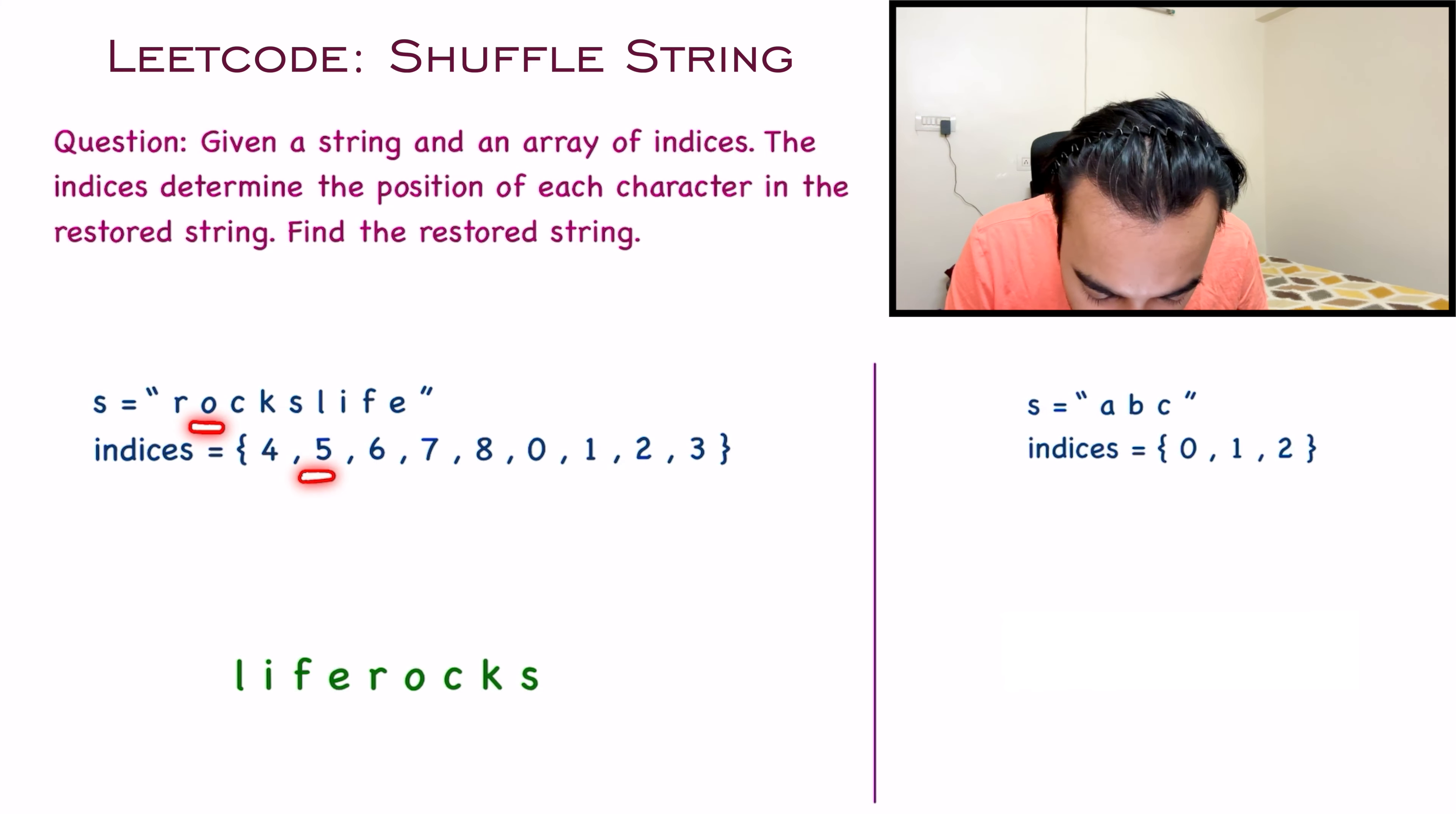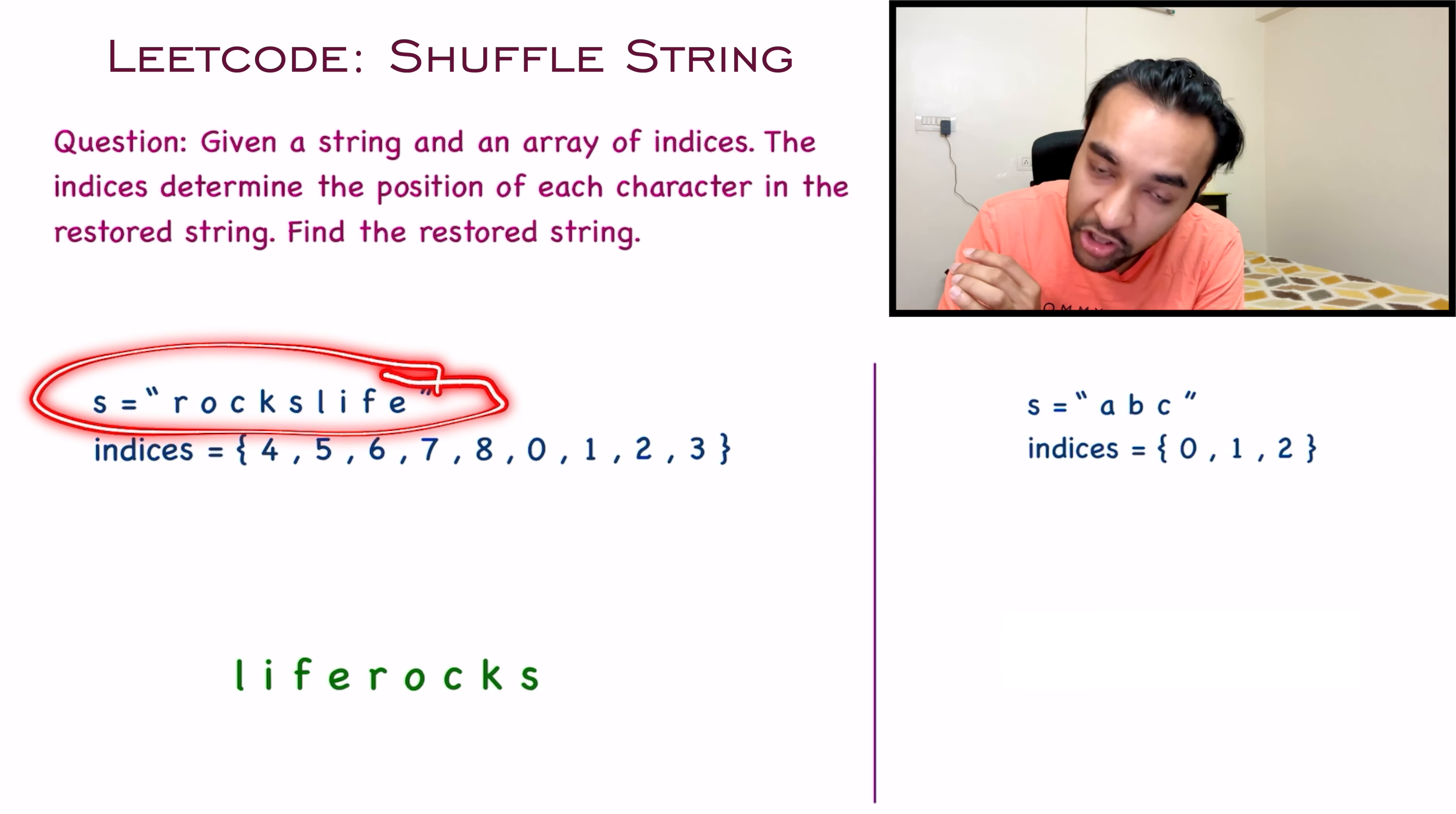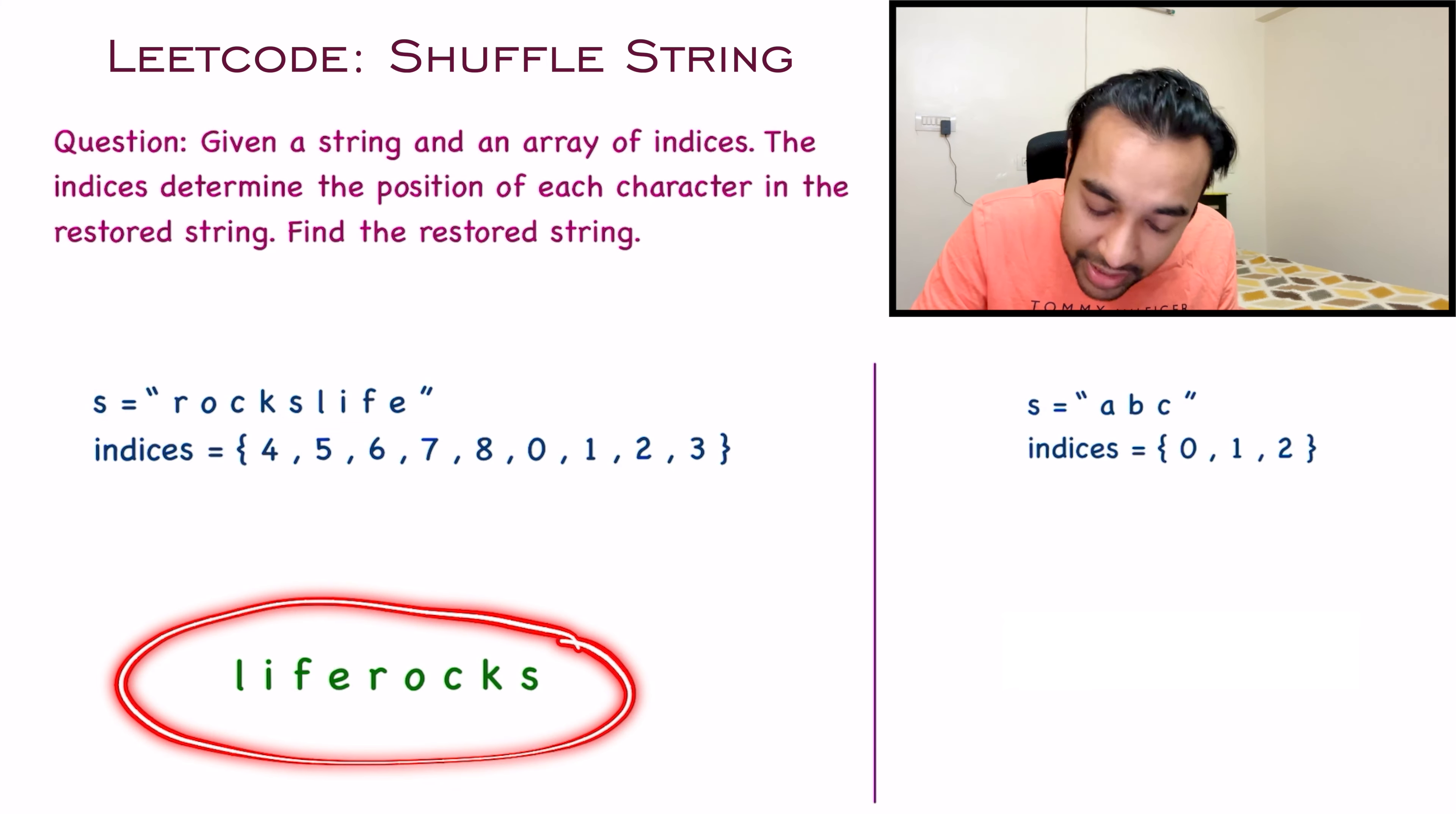You can verify it. Check it out. O should come at the fifth index. And if you count it out 0, 1, 2, 3, 4, 5, O is in fact coming at the fifth index. So technically this string has been shuffled as per all of these indices. And you have to find out the original string or the restored string. For your first test case, this is your restored string.